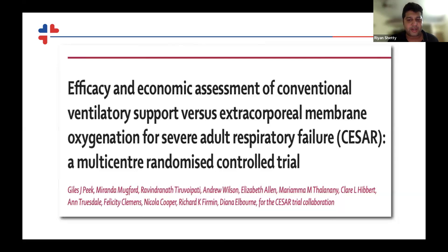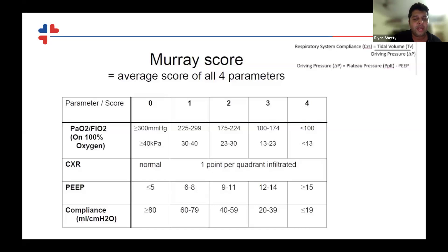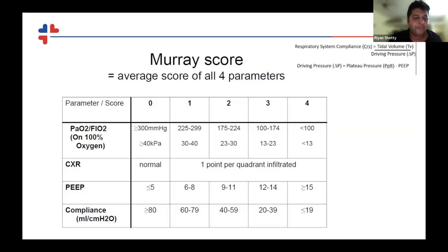A landmark trial in 2009 randomized patients during the H1N1 pandemic in the UK — in Leicester — to conventional ARDS management or ECMO. This was the CESAR trial. They used a tool called the Murray score, which uses parameters including the PaO2/FiO2 ratio, chest X-ray, PEEP, and compliance. An average Murray score above 2.5 was associated with a high likelihood of requiring ECMO. However, this score is not fully standardized and was specific to that trial — it is just a guide.